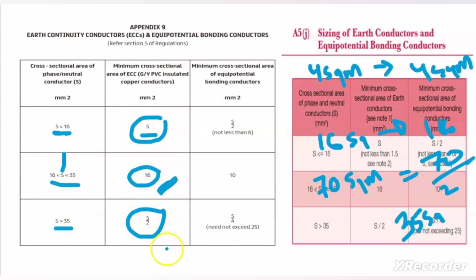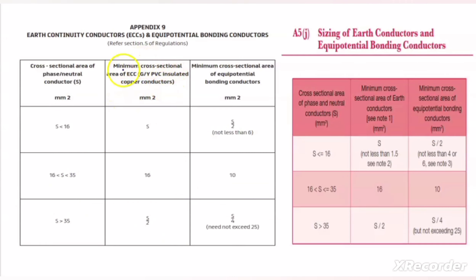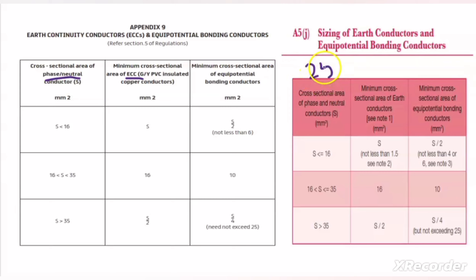Hope you got this point very clearly. If you understood clearly how to select the ECC conductor size depending on the phase or neutral conductor, then please write in the comment box: what would be the ECC conductor size when the phase conductor size is 25 mm²?